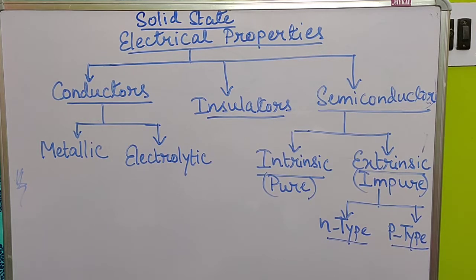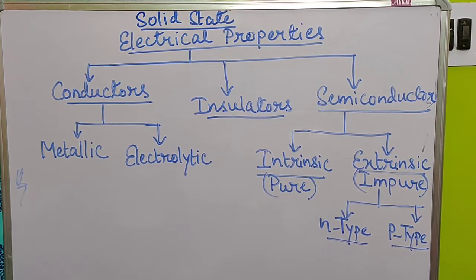The first type of solid is conductor. The next type is insulator. And the third type is semiconductor. First we will learn about conductors, and then we will go to the next two parts.